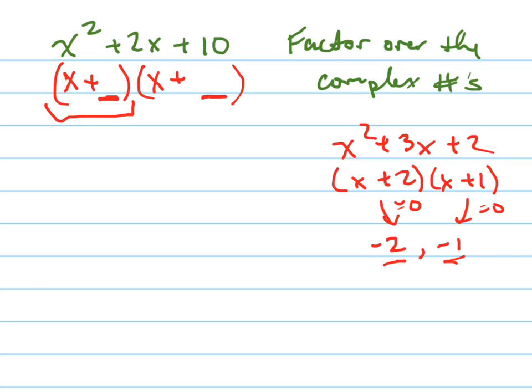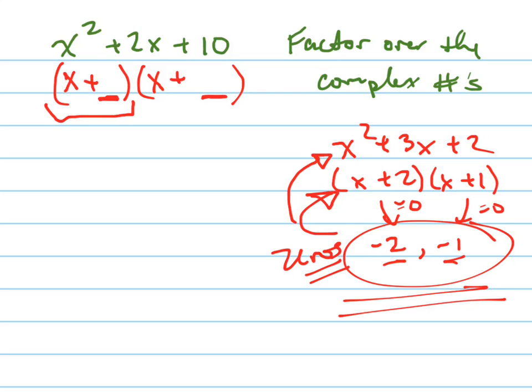So remember, your zeros, or roots, are related to factors, which could be multiplied together to give you your standard form equation. So that's the simple thing with real numbers. We've done that in algebra 1. Well, now we're going to do this with complex numbers.